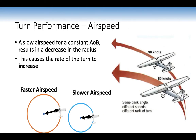Airspeed effect: a slow airspeed at constant angle of bank results in a decreased radius of turn and an increased rate of turn — you cover the circle more quickly at slower airspeed. At faster airspeed, the circle is bigger. It's like turning in a car at 20 km/h versus 40 km/h — at 40 you have a larger radius and a smaller rate of turn.